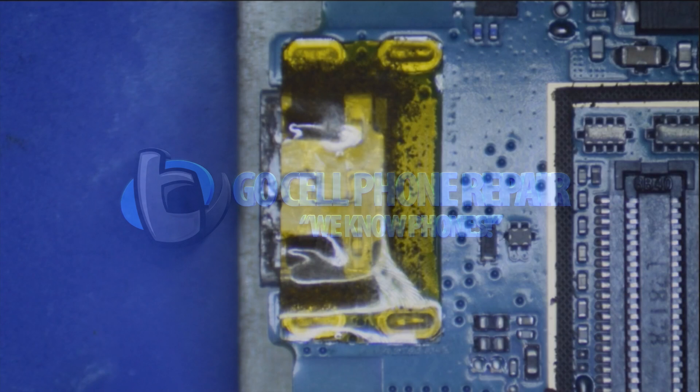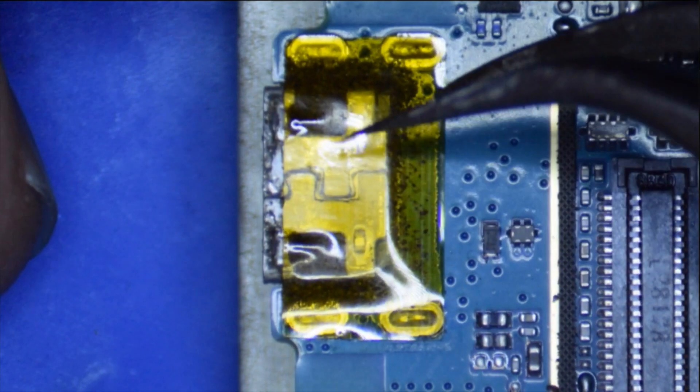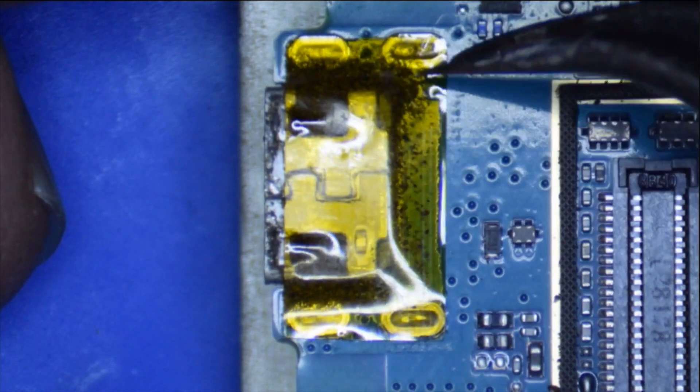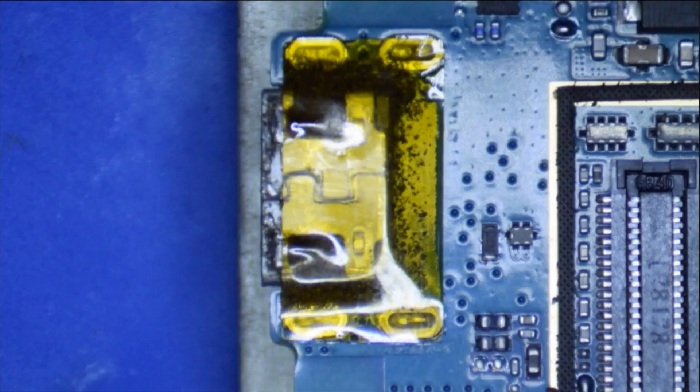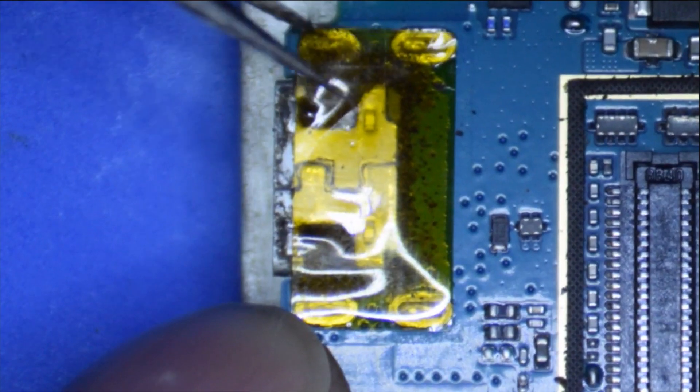We are going to start by removing this Kapton tape. I did not put this here - it was already on the phone. I assume they put this on in the factory, and I'm not sure why, but we need to peel this off so that we can have access to the anchors over here.